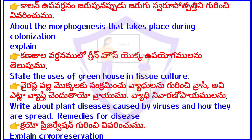About the morphogenesis that takes place during colonization — explain. What is the use of greenhouse in tissue culture? Regarding virus diseases — the diseases caused by viruses, how they are spread, and remedies. Explain cryopreservation.